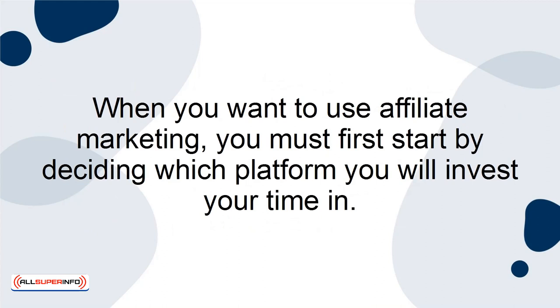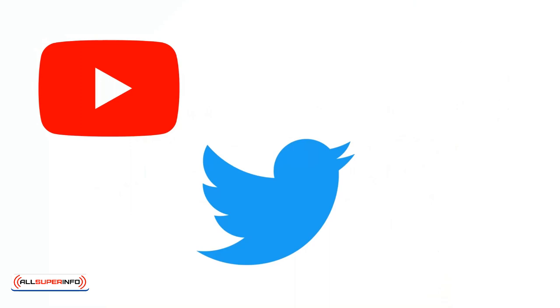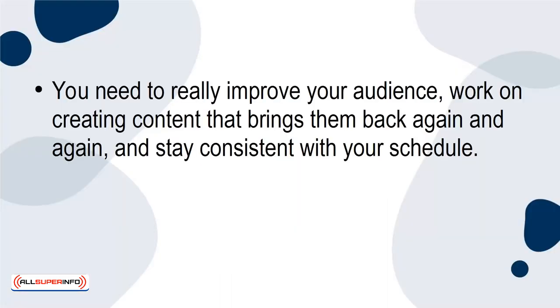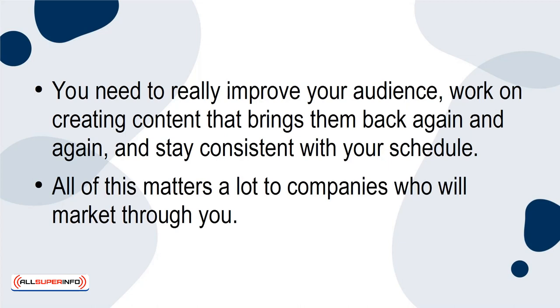When you want to use affiliate marketing, you must first start by deciding which platform you'll invest your time in. Is it your YouTube channel? Maybe you're going to start marketing on Twitter or TikTok. Whatever choice you make, stick with it, especially at the beginning. You need to really grow your audience, work on creating content that brings them back again and again, and stay consistent with your schedule. All of this matters a lot to companies who will market through you.